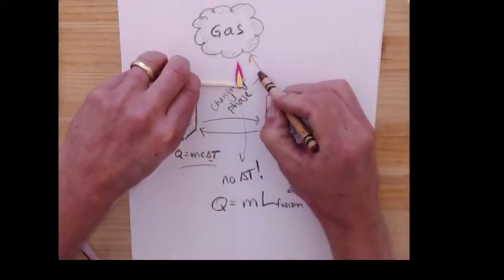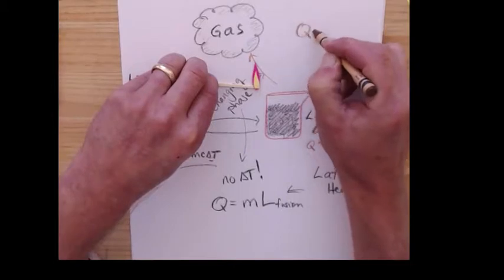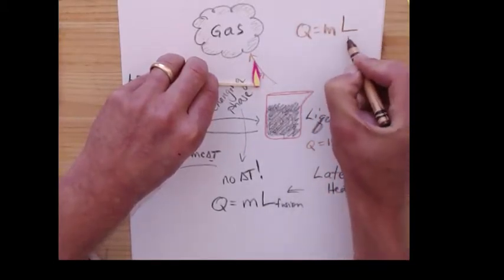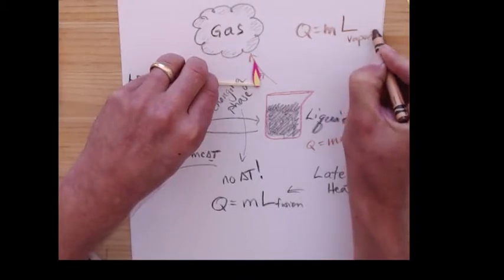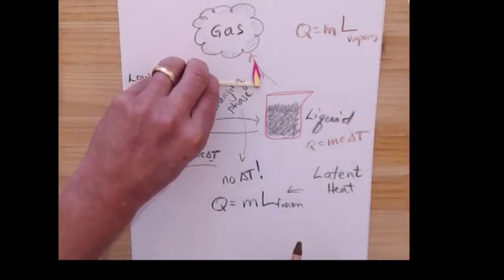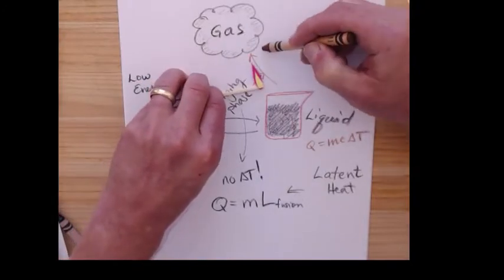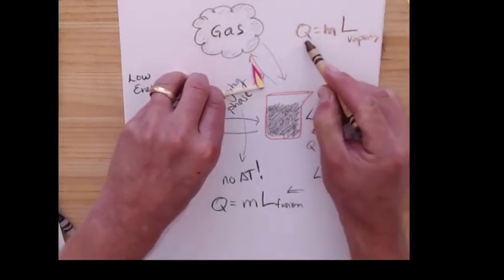And when it boils, it turns into a gas. Now I'm changing phase again. Q equals ML. Except now this is the latent heat of vaporization. Again, it's vaporization. So also if the gas turns back into a liquid, that's also this one.